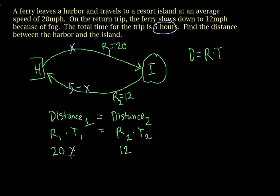That's all you need. Plug in x equals T1, 5 minus x for T2, set them equal to each other and solve the equation. So 20x is equal to 60 minus 12x, and add 12x to both sides.